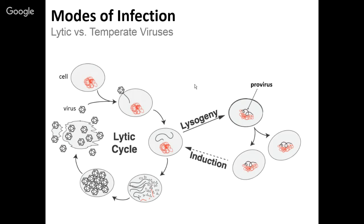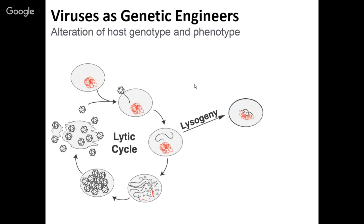Viruses can also be essentially our genetic engineers. In the process of lysogeny, because of this intimate interaction between a viral genome and the host genome, we have a fundamentally genetically different type of cell than it was before infection. That viral genome very often codes for genes that give that cell selective advantages — they can code for antibiotic resistance, provide immunity to infection by other related viruses, change cell wall properties, or allow that bacterium to produce toxins. We call this lysogenic conversion, where infection with a virus actually changes the capabilities of that cell. It could be good or bad.